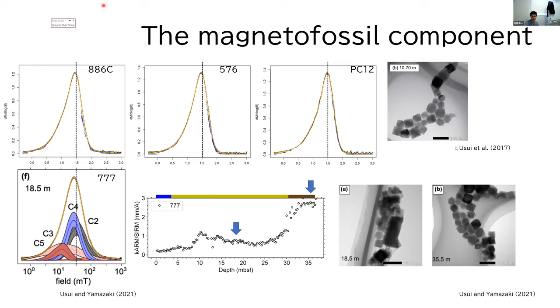Furthermore, these samples, including the one with moderate ARM susceptibility, contain a biogenic magnetite of very similar size and shape under TEM observations.